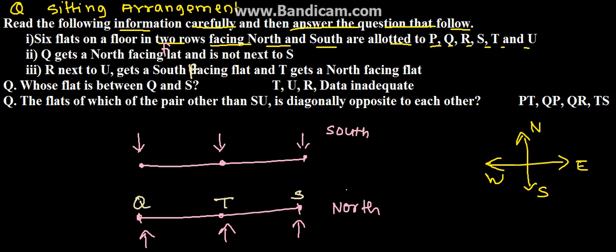Now we have only U, R, and P left. U and R are next to each other as given in the question, so that means U will be here, R will be here, and P will be here. So this is the order.